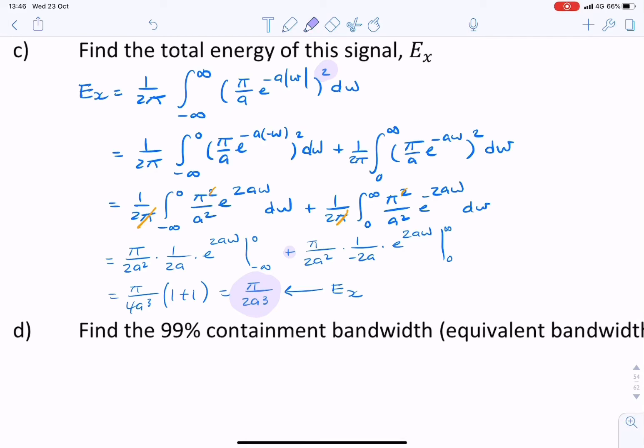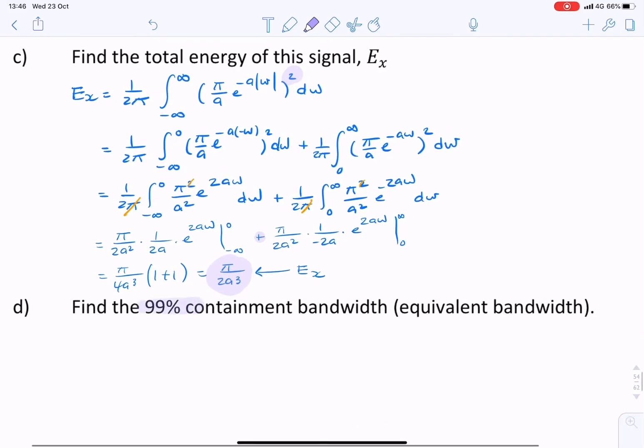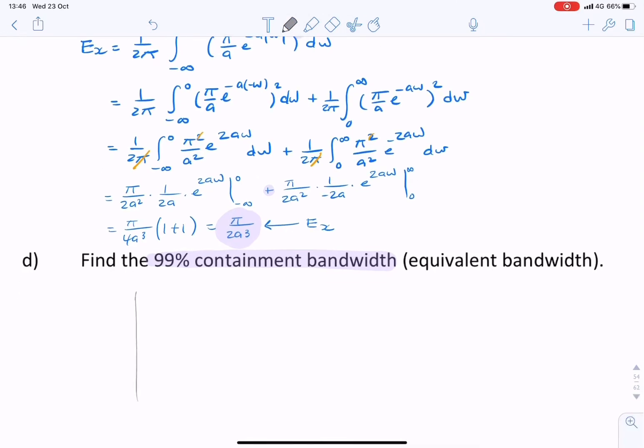Next, it's asking for the 99% containment bandwidth. So it's asking what bandwidth will contain 99% of the signal energy. So if we look at a double-sided exponential like this. The question is, what is this bandwidth? What's this value of ω for which the signal will have 99% of the energy inside that bandwidth from minus ω to ω?